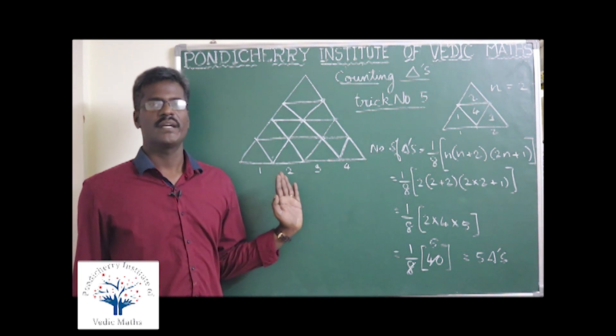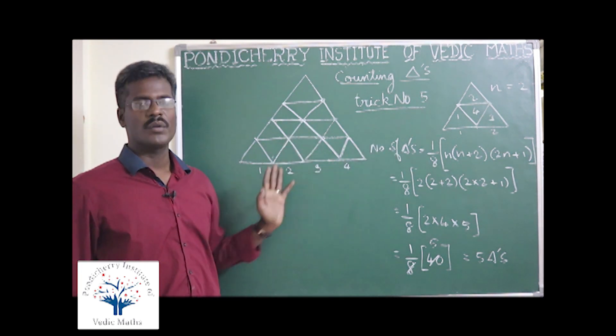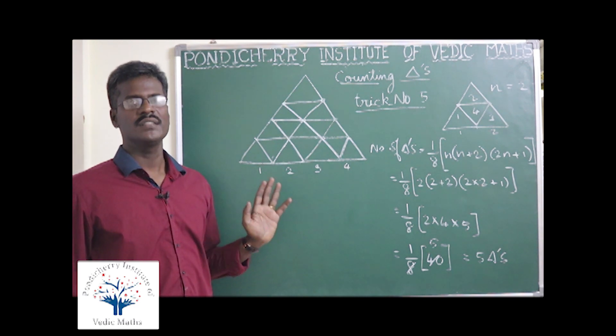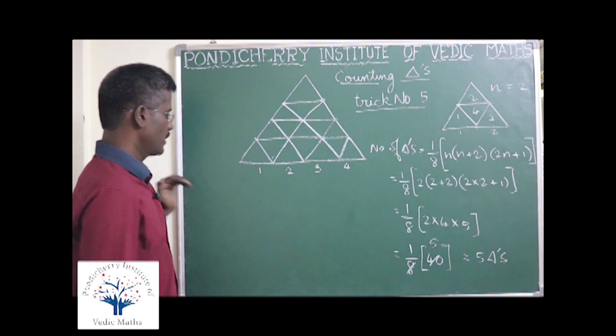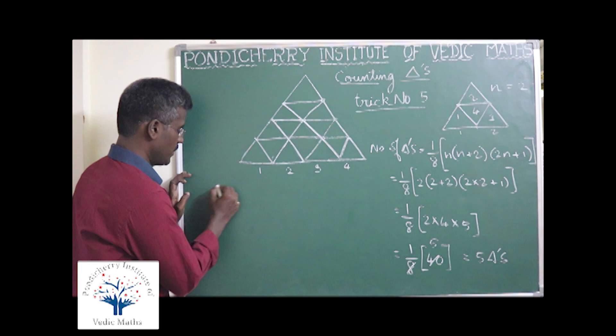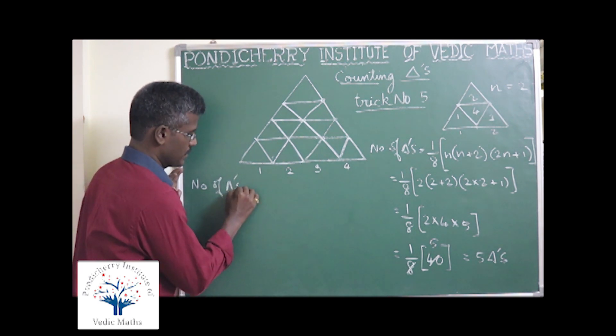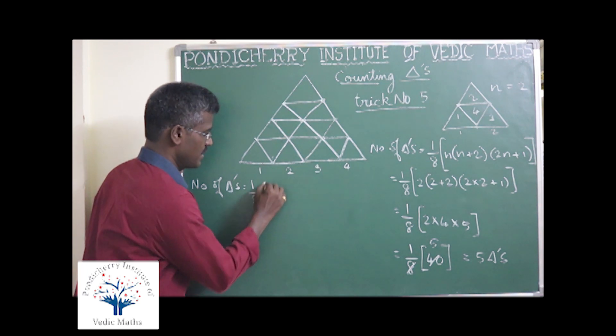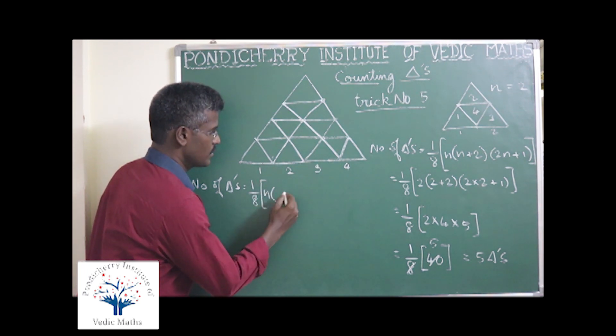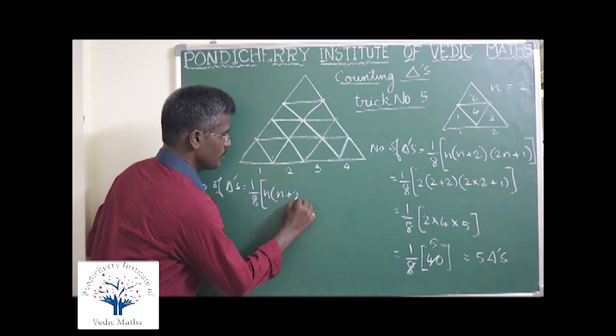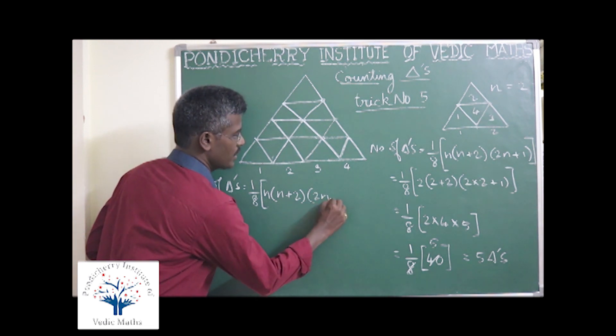When it is becoming complicated like this, with the appropriate application of this formula, we will simplify it. So I will again apply the formula. Number of triangles is equal to 1 by 8 into n into n plus 2 into 2n plus 1.